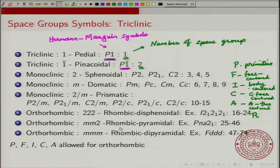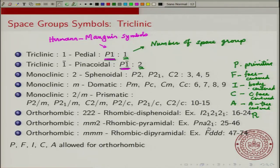For the rhombic pyramidal class MM2, one example shows that the first position mirror is actually a diagonal glide reflection symmetry, the second mirror is an A-glide, and the twofold axis of rotation is a 2₁ screw axis. In this rhombic MM2 crystal class, there are actually 22 different space groups, numbered 25 to 46.